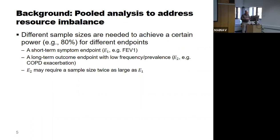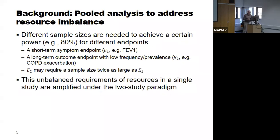Sometimes the sample size needed for a hard clinical endpoint could be easily twice as large as needed for the short-term symptomatic endpoint to achieve the same power. These unbalanced sample size requirements are amplified under the two-study paradigm, and sometimes you may even run three studies in order to get two positive and significant results. So the sample size requirements for hard clinical endpoints are quite limiting.